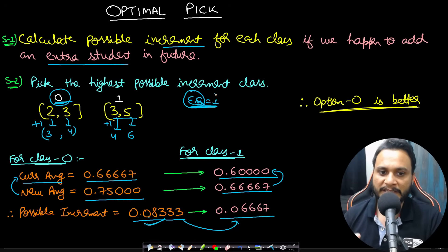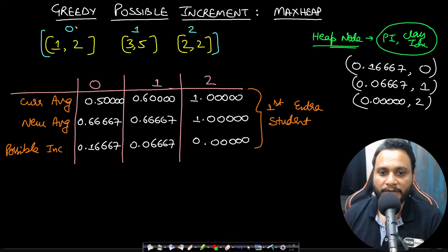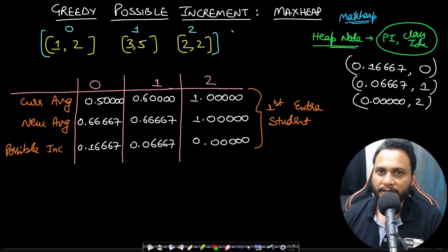The greedy approach: always pick the class that gives the maximum possible increment when an extra student is added. To efficiently pick the maximum increment each time, we use a max heap. This same technique is used in LeetCode 1029, Two City Scheduling.